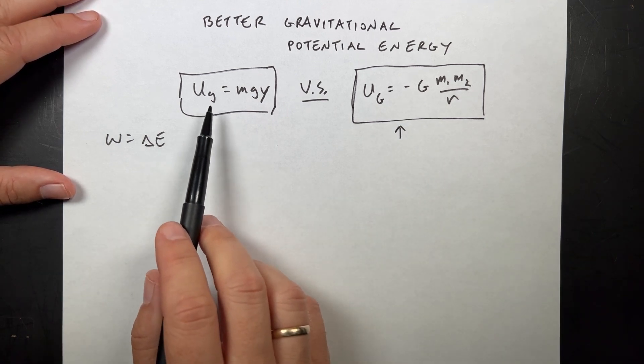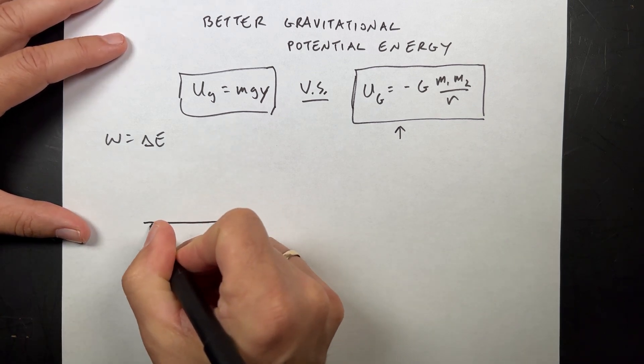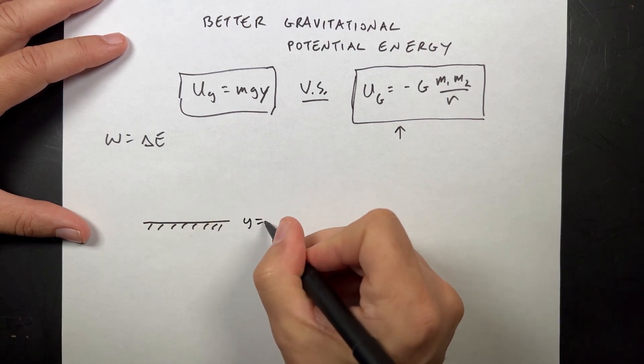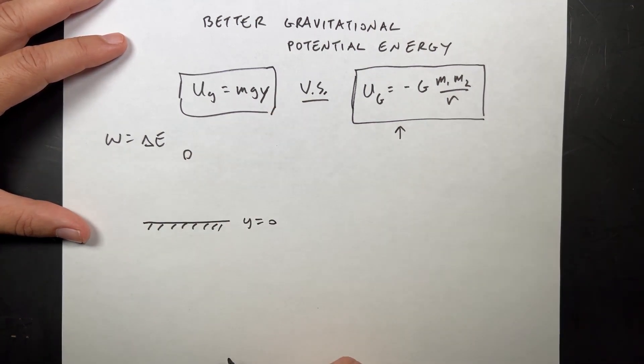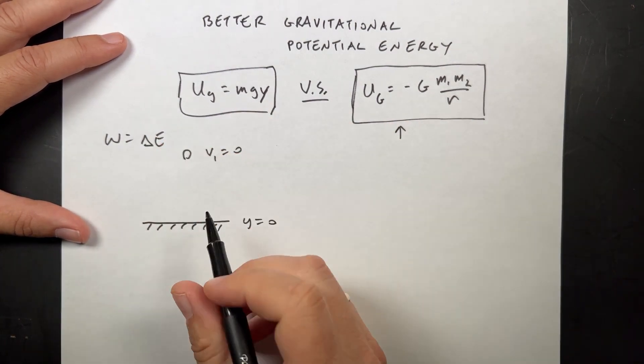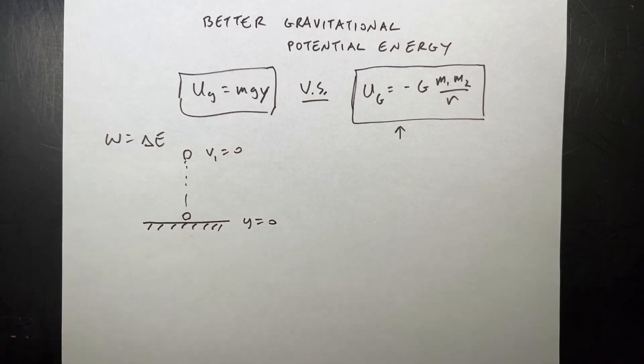To do that, we really need to understand this situation. Let's take the following: here's y equals 0 down here at the bottom. I have a ball with velocity v1 equals 0, and it has mass m. I release it from rest, and it falls, and it lands down here.